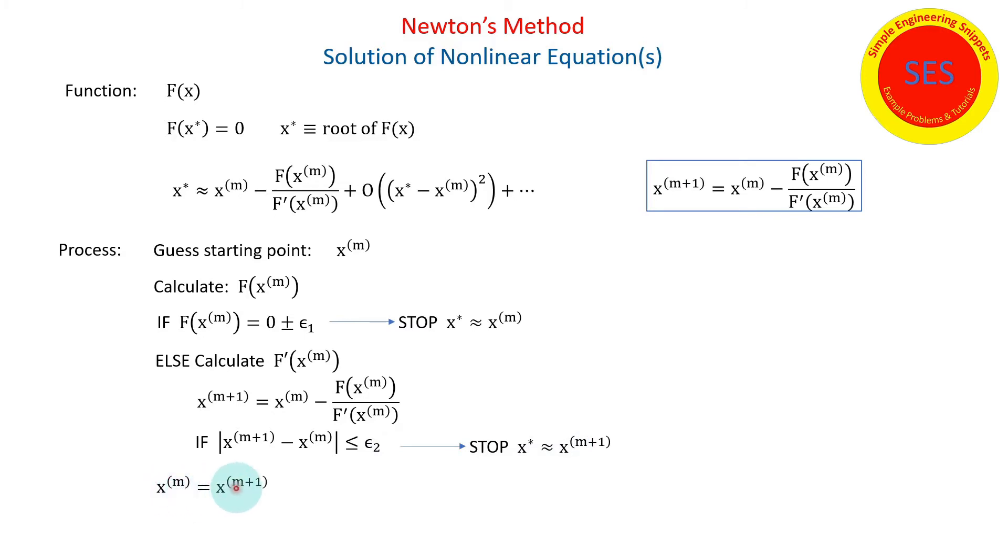And if we can stop there, then let's go ahead and stop. Else, let's set x^(m) equal to x^(m+1), and iterate and keep going through until either we've reached our counter, because maybe we're never going to find a solution, or we've satisfied our stopping criteria. So that's the big picture on how to do that.